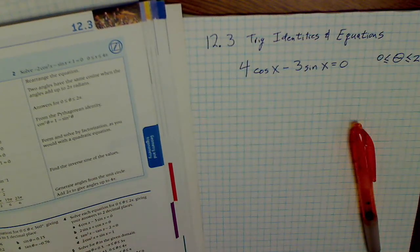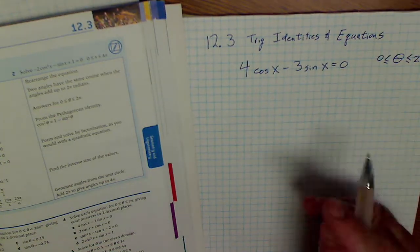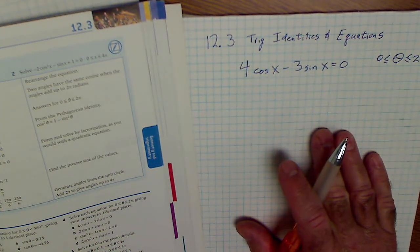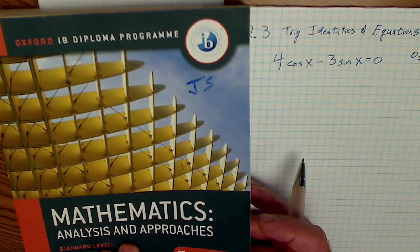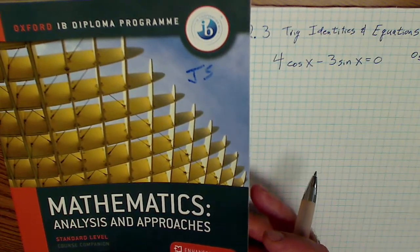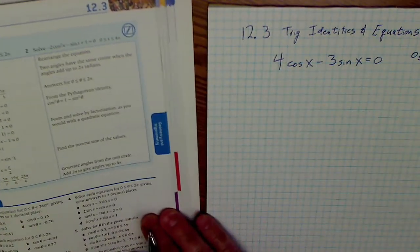Hey, Jonathan here at Colfax Math. I'm going to do one problem from trig identities and equations. This is from the Oxford textbook of math analysis and approaches. It's Math SL, standard level, and this is section 12.3.